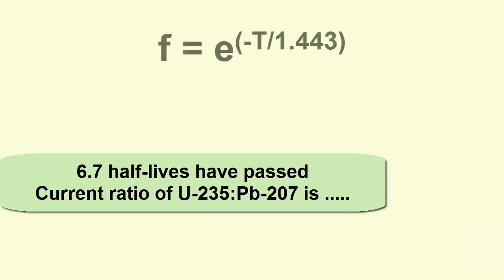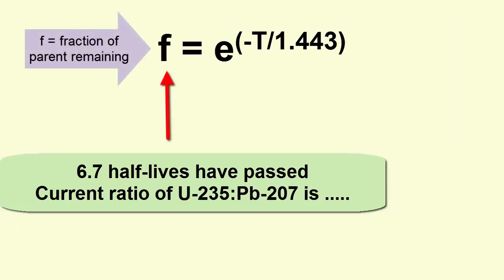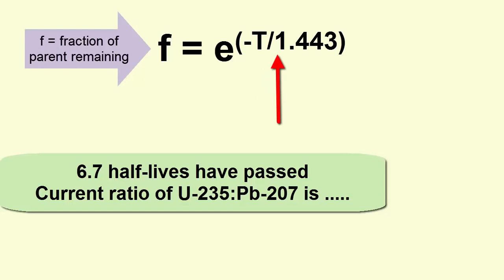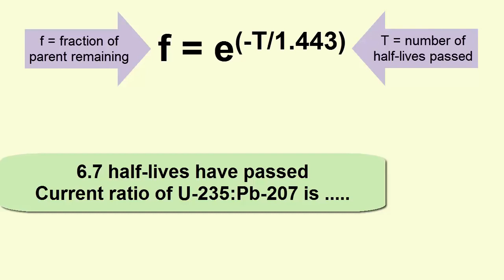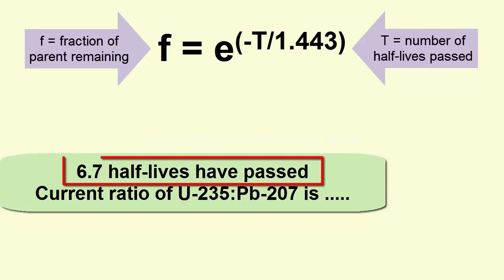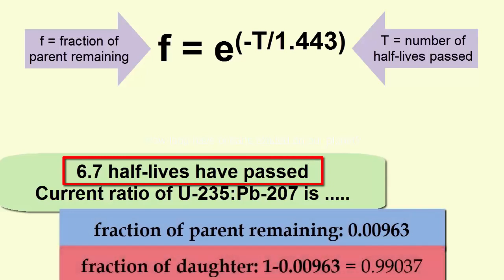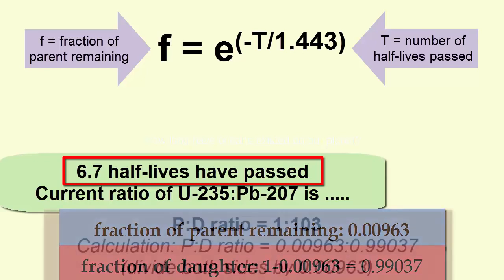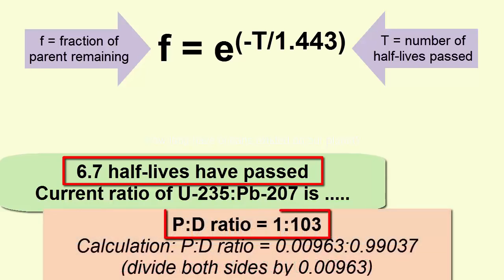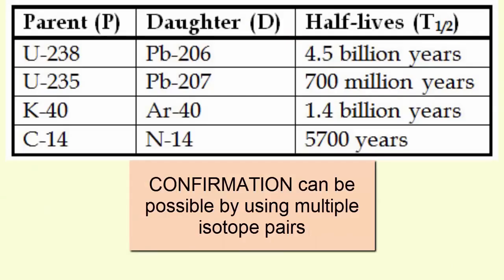To be more precise, we use this equation: the fraction of parent remaining equals e to the power of minus t divided by 1.443, where t is the number of half-lives past. Since t is 6.7, that means the fraction of parent remaining is 0.00963. The remaining 0.99037 must be daughter, and the ratio is 1 to 103. Calculating age using multiple radioactive isotope pairs is a method we use to confirm our dates.